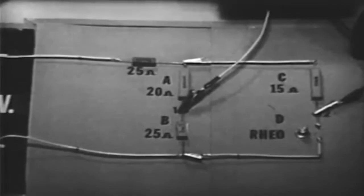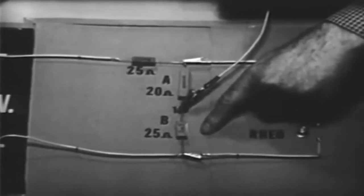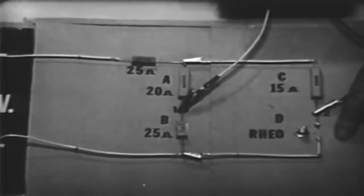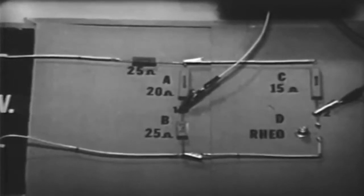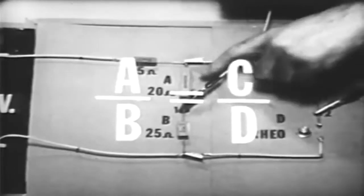Voltage A is exactly the same as voltage C. We proved that in two ways: we measured the voltages, and we have no current through the meter. This action also proves that voltage B is exactly the same as voltage D.